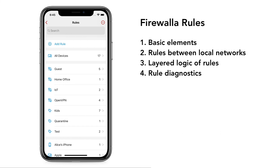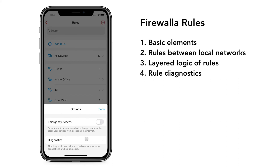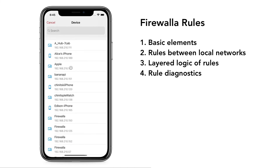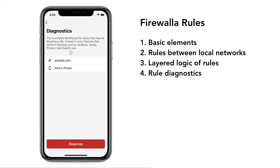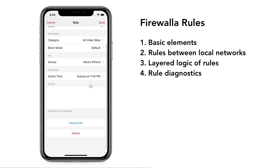In the Rules UI, tap the diagnostics icon. Then under Diagnostics, type in the website being blocked and select which device is having the issue. The result will show you whether the block is related to an existing rule. You can tap on the rule to pause or delete it.